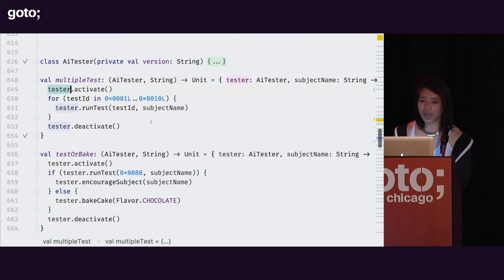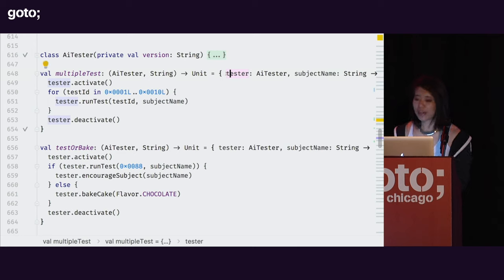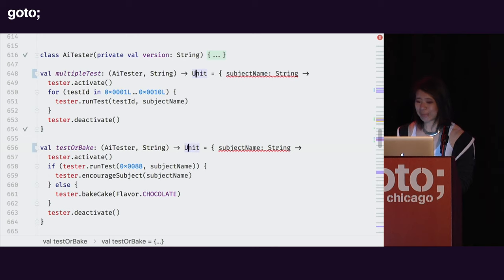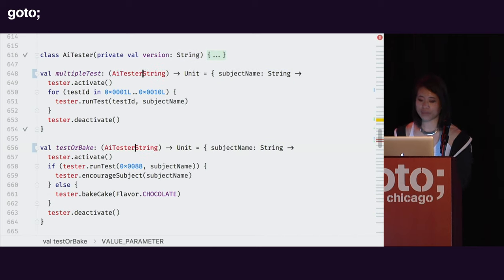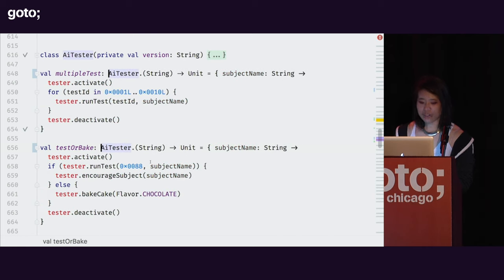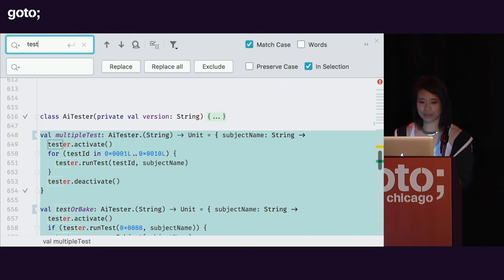I'm noticing that in these vals containing lambdas and in the body, I'm calling 'tester dot' a lot — tester dot this, tester dot that. There's actually something I can do to make this a little bit better and cut down on the visual noise. That's where lambdas with receivers come in. When you have a lambda with receiver, you have a lambda with multiple parameters, and what you do is take one of those parameters and give it superpowers — I like to say you're elevating it. You take a parameter from that lambda and make it the receiver — the 'this' inside of that function block.